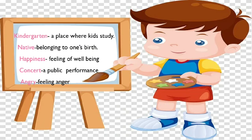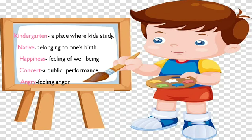Here are some words that are new for you. Let us read and understand them. Our first word is Kindergarten — a place where kids study. The translation of this word is BAHCHA. The second word is Native — belonging to one's birth. The translation is our native land. Native language is DOĞMA. Happiness means feeling of well-being. This word is translated in our language as XOŠBĞLIK.